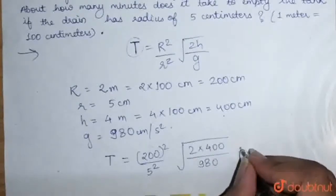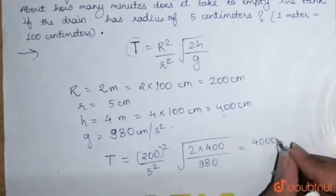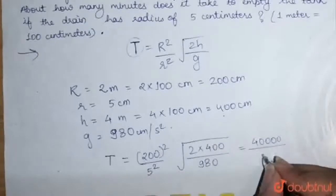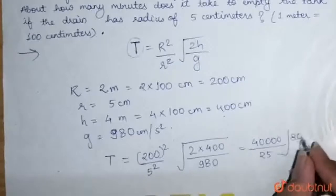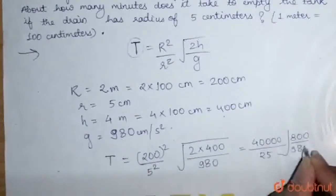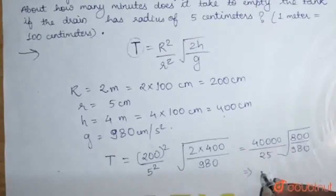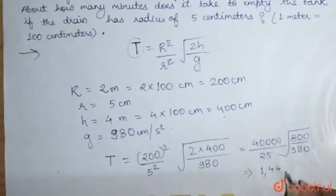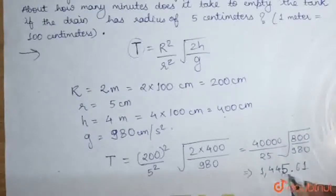When we solve this, we get 40,000, which is 200 squared upon 25, under root 800 by 980. While calculating this, we will get 1445 minutes, approximately 1445.61.